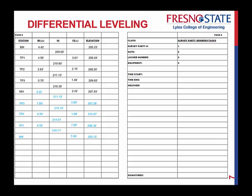Did we end up at our same elevation? No, we didn't. We calculated this to be 205.15, but remember, this is your benchmark — that's what we should have ended up at. This is now calculated based upon the loop, and now we know that something is wrong.